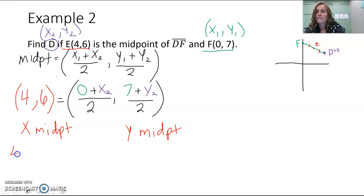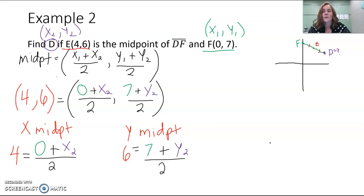For our x midpoint we have 4 is equal to our x coordinate, which comes from taking 0 from our x coordinate of F plus x₂, our x coordinate of D we don't know, and dividing it by 2. And then our y coordinate of our midpoint, 6, comes from taking 7, our y coordinate of F, and adding with it y₂, our y coordinate of D we don't know, and dividing by 2.